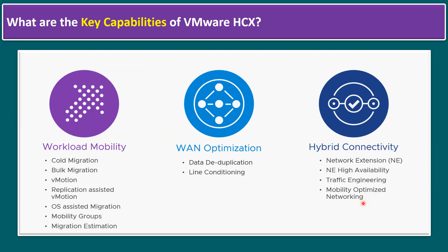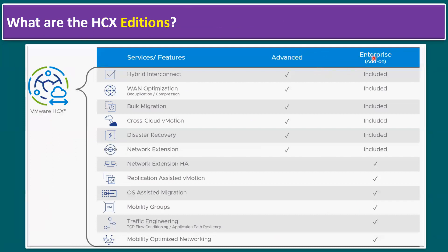HCX has two editions: Advanced and Enterprise. The Advanced edition includes hybrid interconnect, WAN optimization with deduplication and compression, bulk migration, cross-cloud migrations (private to public or vice versa), disaster recovery, and network extension supporting VLAN to VxLAN and network mapping for VM migrations.